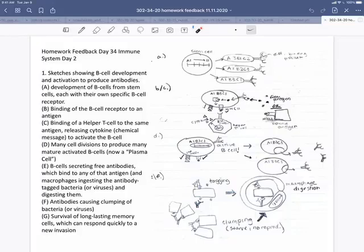The first question asked for sketches on B cell development and activation to produce antibodies. For part A, development of B cells from stem cells, each with their own specific B cell receptor, then binding of the B cell receptor to an antigen, and binding of a helper T cell to the same antigen, and then sending a chemical message to the cell, replication of that activated B cell through multiple rounds of division.